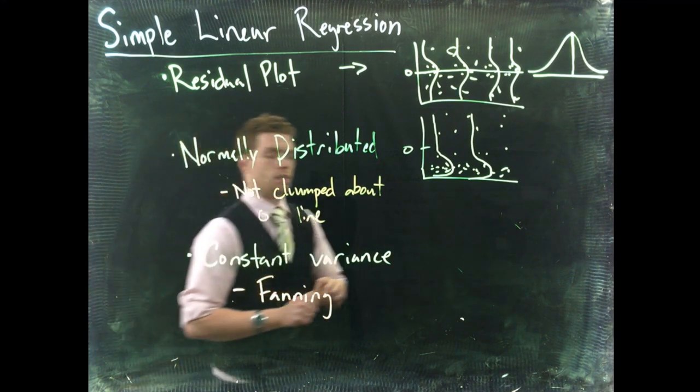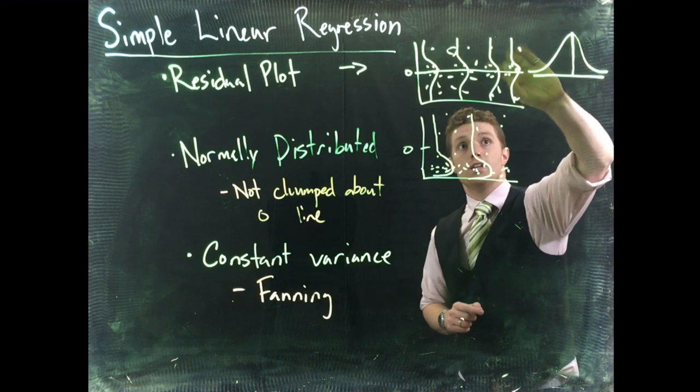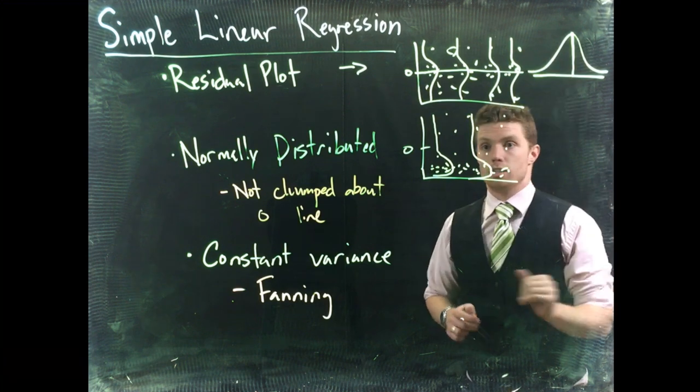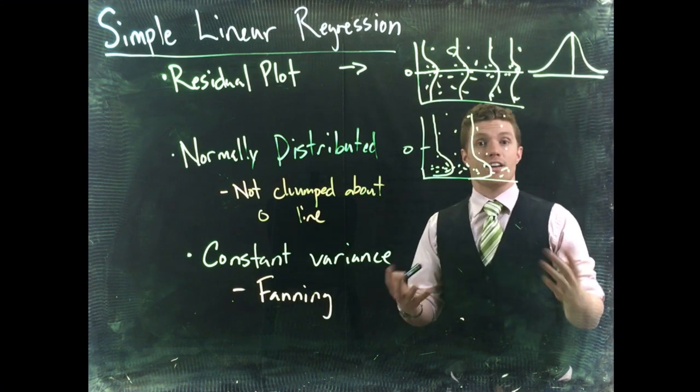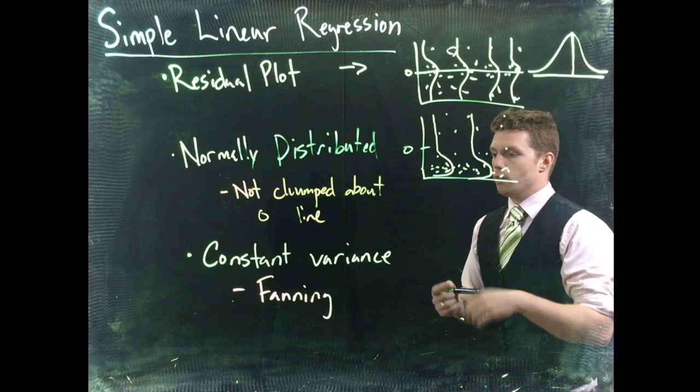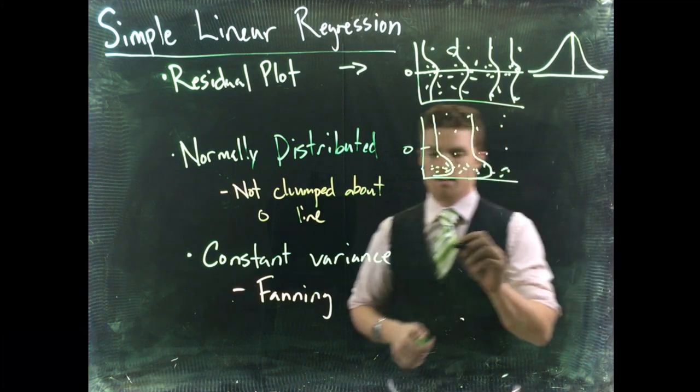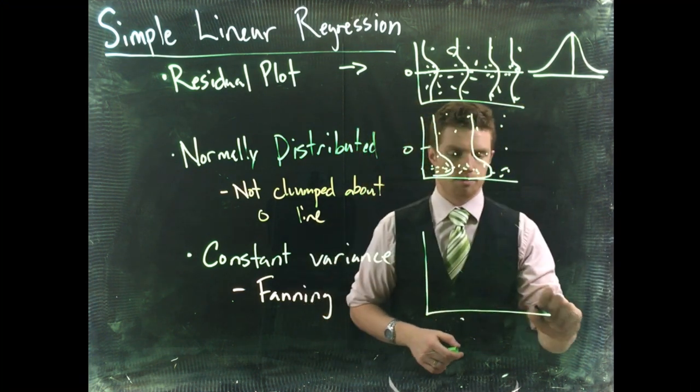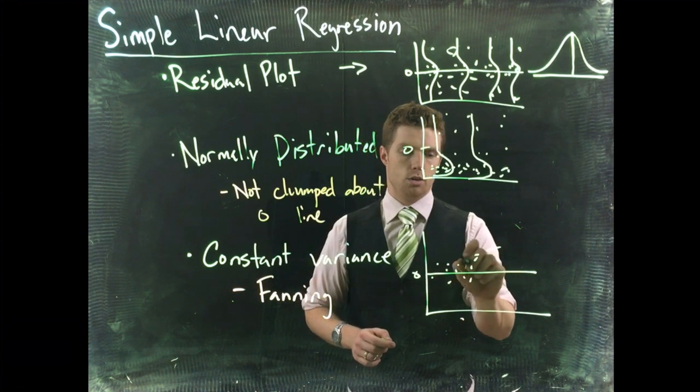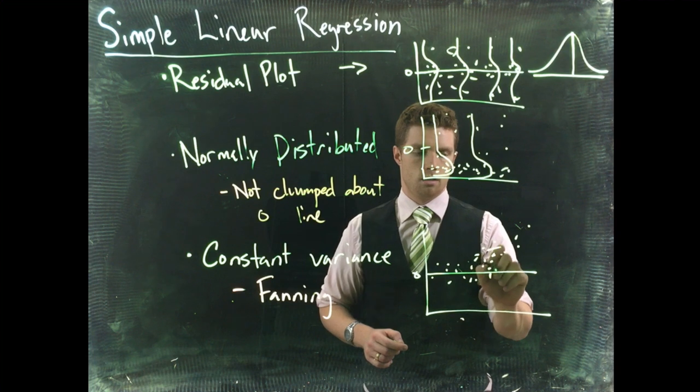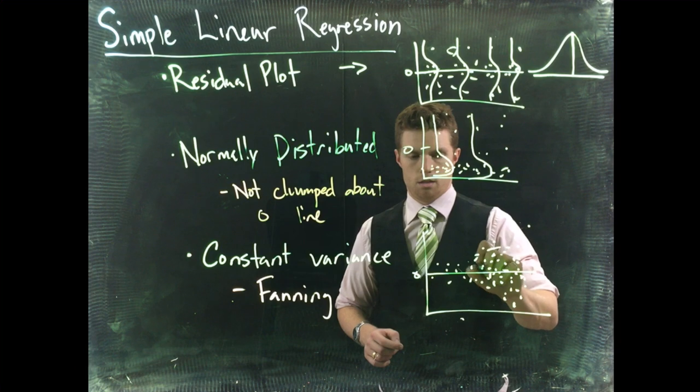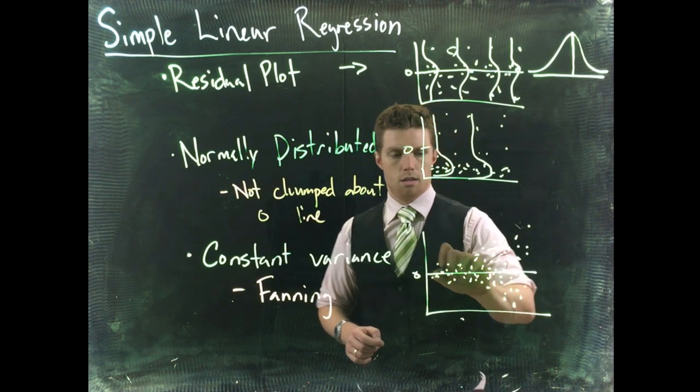So let me draw a picture of it once again. Okay so notice up here how our normal distribution is like the same size as we go down our distribution. The variance or the spread of that distribution doesn't change. Okay now though, this is what happens when we have non-constant variance. So we have it about zero and we have our data points and they do something like this.